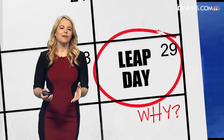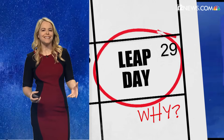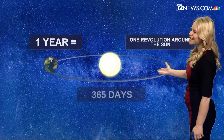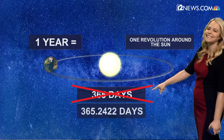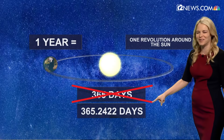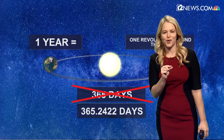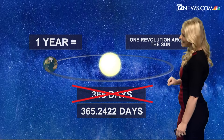Why leap day? Well, it mostly has to do with the time it takes for the Earth to revolve around the sun, which is 365 days. Technically, no — technically, one year is a hair longer than 365 days.